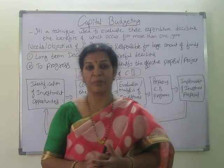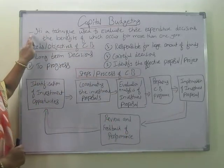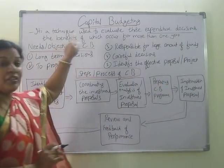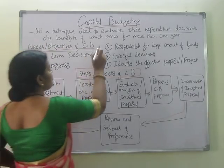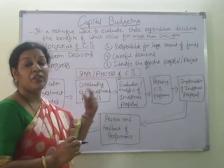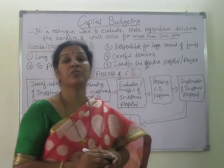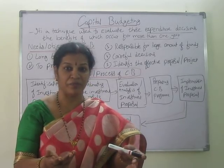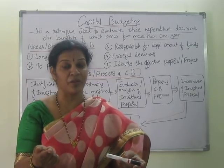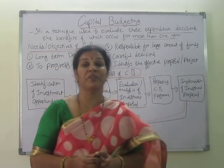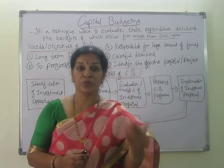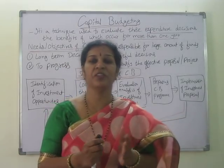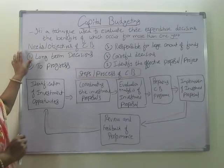Let's see the definition of capital budgeting. Capital budgeting is a technique used to evaluate expenditure decisions where the benefits occur for more than one year — meaning long term. Below one year is short term; above one year is long term. Whatever long-term expenditure or investments you are going to make, that is what is conveyed in capital budgeting. This is the definition. Now let us see the needs and objectives of capital budgeting.